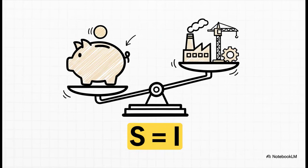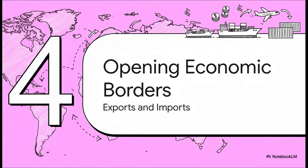Now that S equals I relationship is beautifully simple, but let's be real — the world isn't a collection of closed-off islands. Countries trade with each other. So now it's time to open up the borders and see how that changes the entire picture.